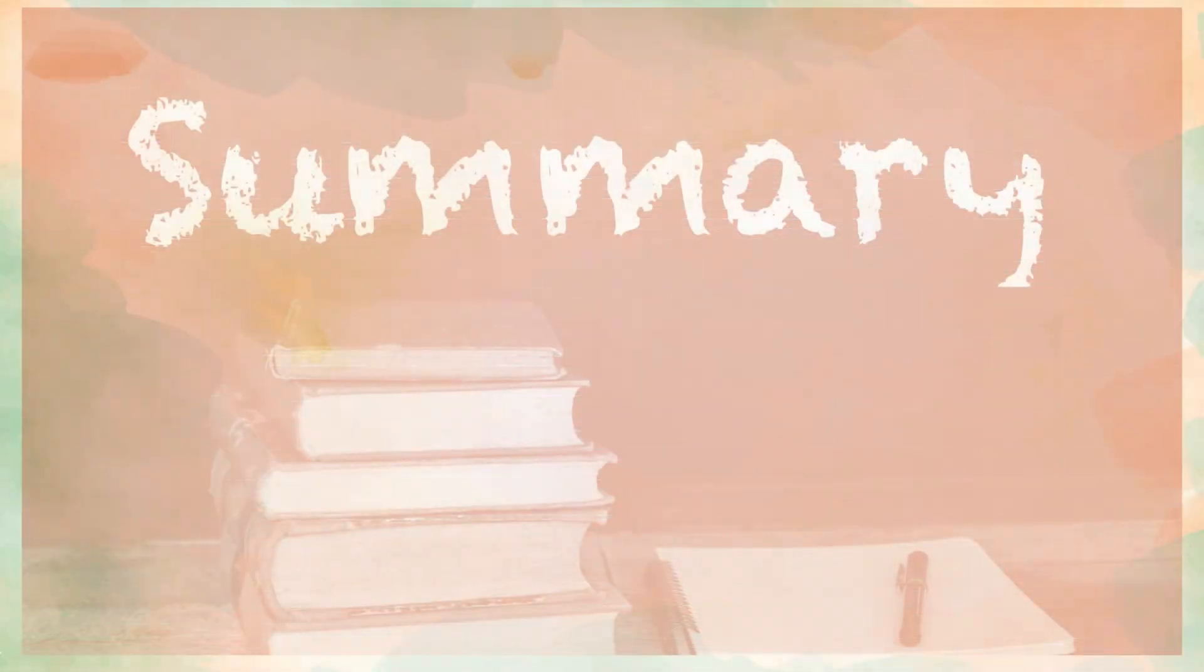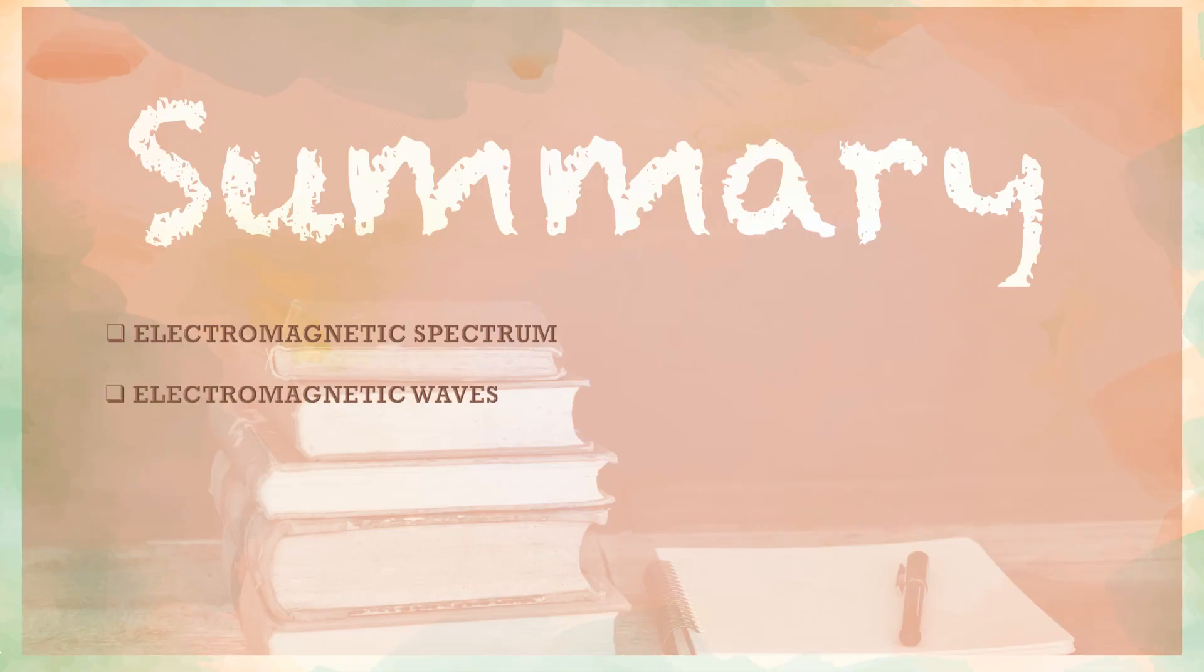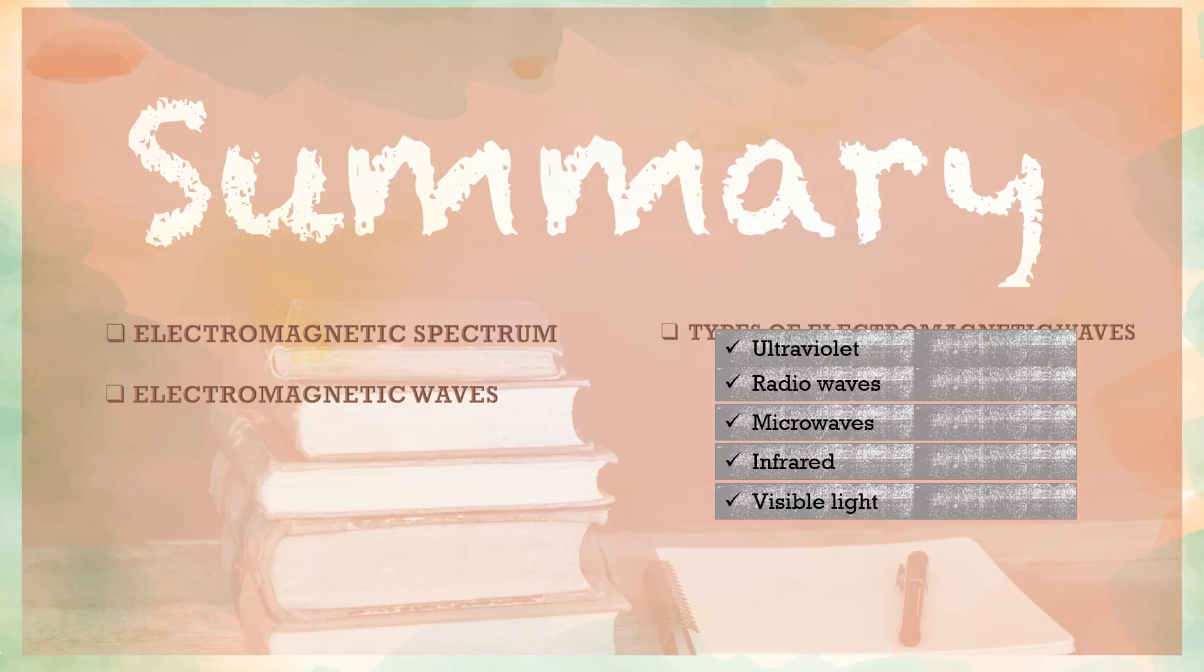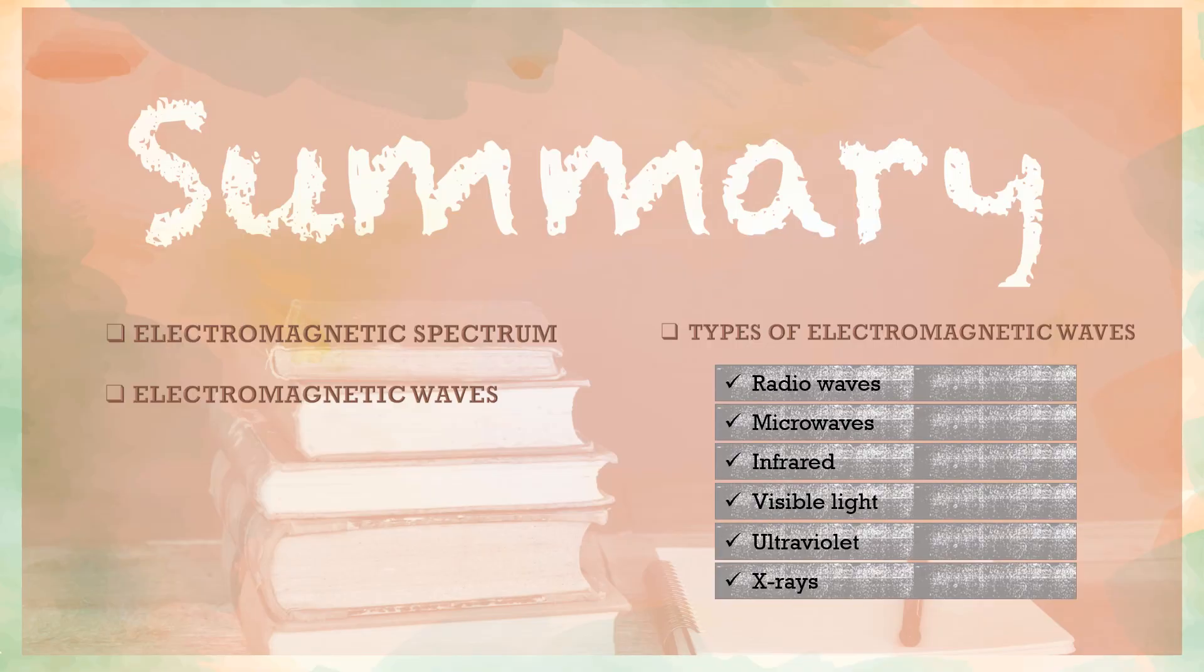For the summary of today's topic, we have discussed the electromagnetic spectrum, electromagnetic waves, types of electromagnetic waves, which comprises of radio waves, microwaves, infrared, visible light, ultraviolet, X-rays, and finally, gamma rays.